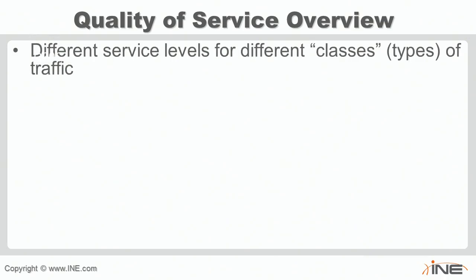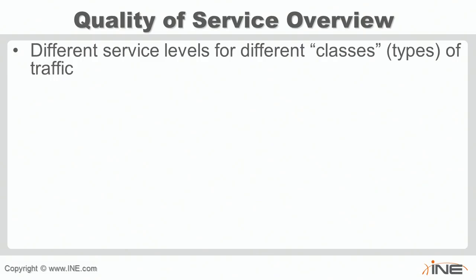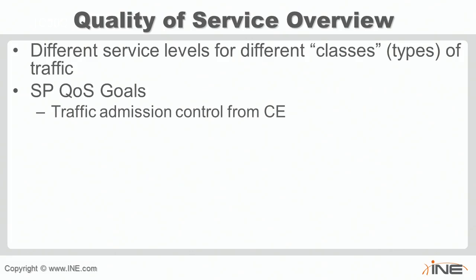The overall goal of quality of service is to offer different levels of service or different service level agreements to different types or classes of traffic. From a service provider's point of view, a main goal is to support multiple customers buying different levels of service. The first step is to ensure that traffic entering the network follows the agreed-upon SLA. For example, a customer might buy 10 megabits per second guaranteed, burst up to 20, with anything between 10 and 20 not guaranteed, and anything above 20 dropped.